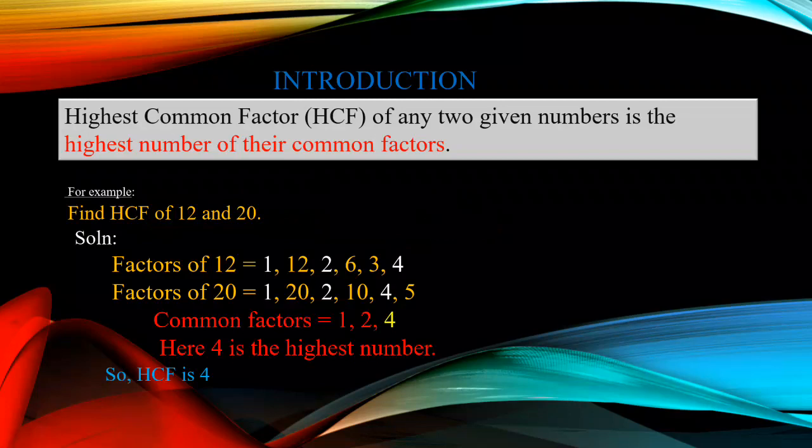Factors of 20: 1, 20, 2, 10, 4, and 5. Next, we have to find common factors. What are the common numbers? 1, 2, 4. Third step, we have to find out the highest number. Here, 4 is the highest number. So, HCF is 4.